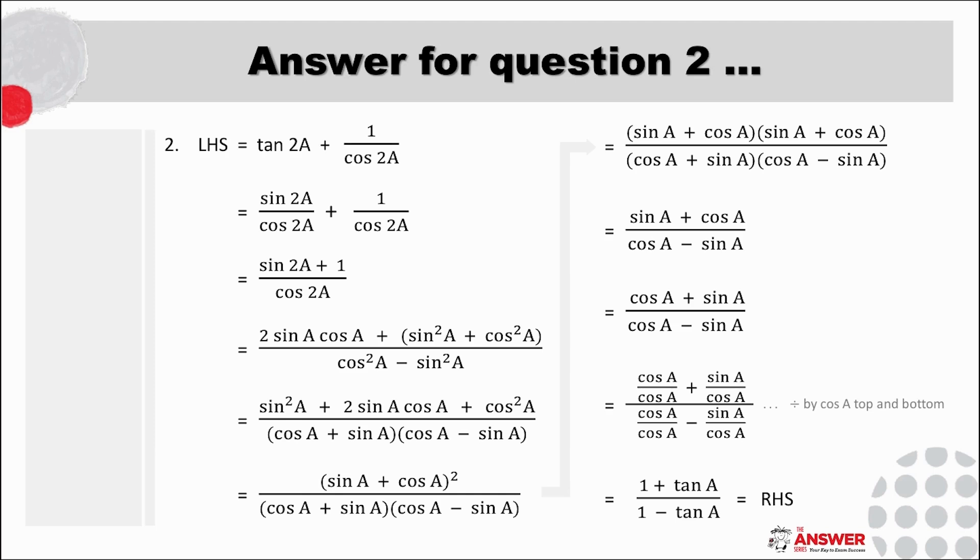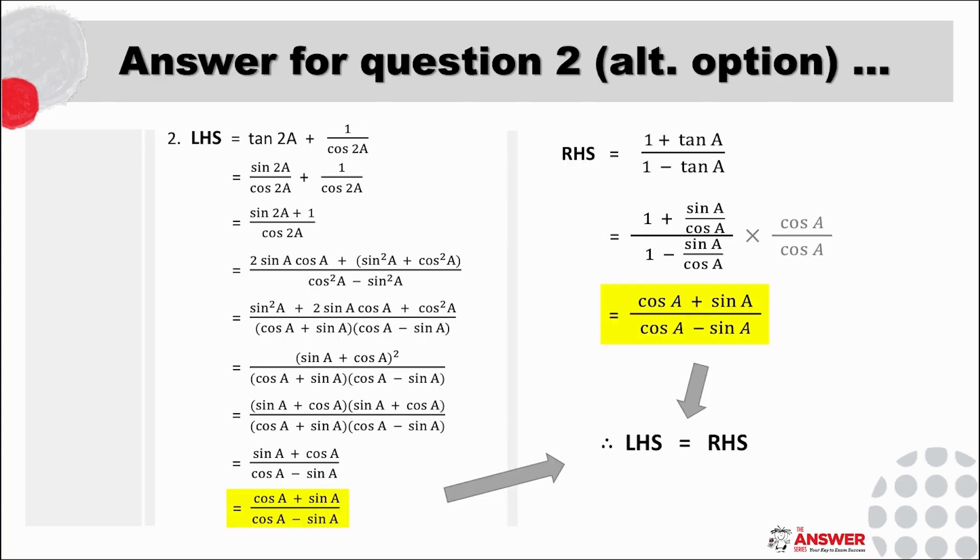There is also an alternative approach which we always have the option to use and that is to start each side separately and see if we can work them towards each other. Here is the illustration of this other approach and sometimes this can feel simpler. As you can see here we've expanded the right hand side using the tan identity and so in this example we were able to prove left hand side equal to right hand side by getting each side to reach a point where they were equal.